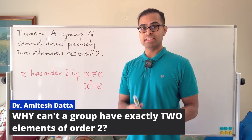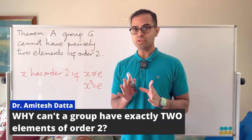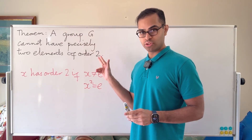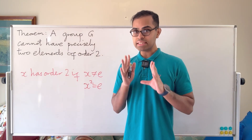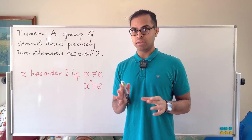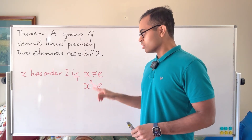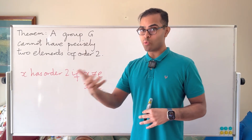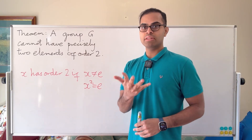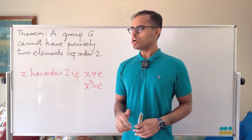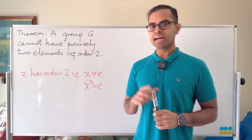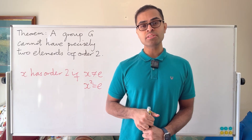Here's a fun group theory challenge: a group G, no matter what it is, cannot have precisely two elements of order 2. The order of an element is the smallest power of the element that equals the identity. So an element has order 2 if it's not the identity — its first power is not the identity — but its second power is. A group cannot have precisely two elements of order 2.